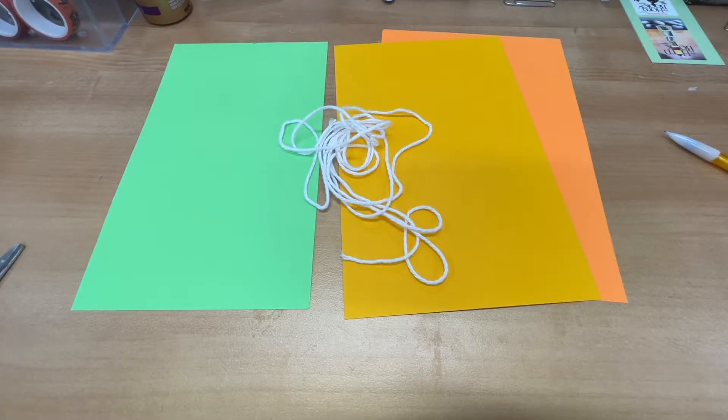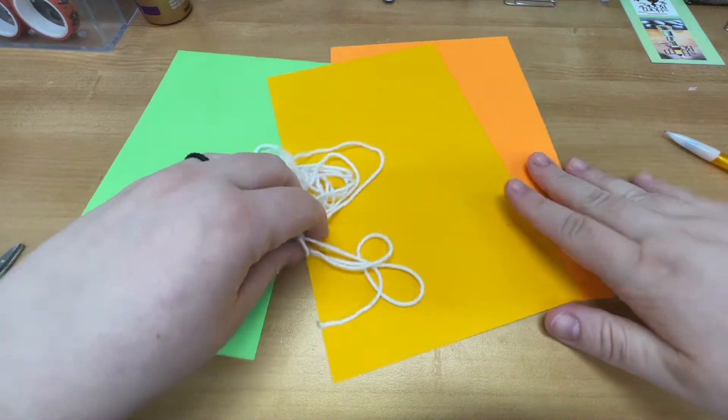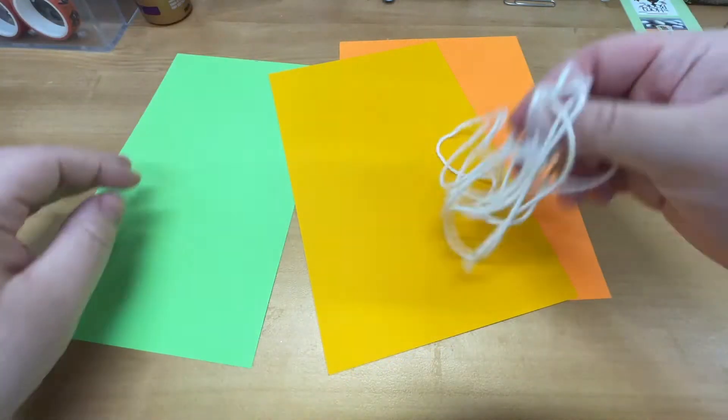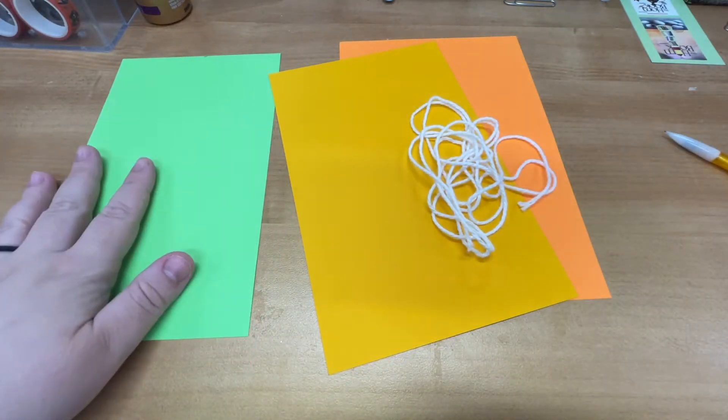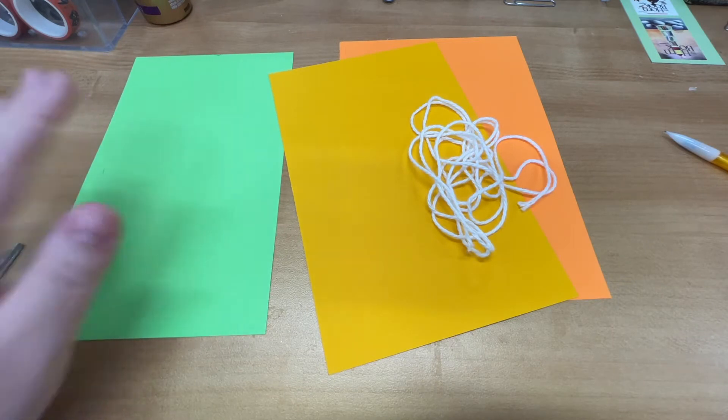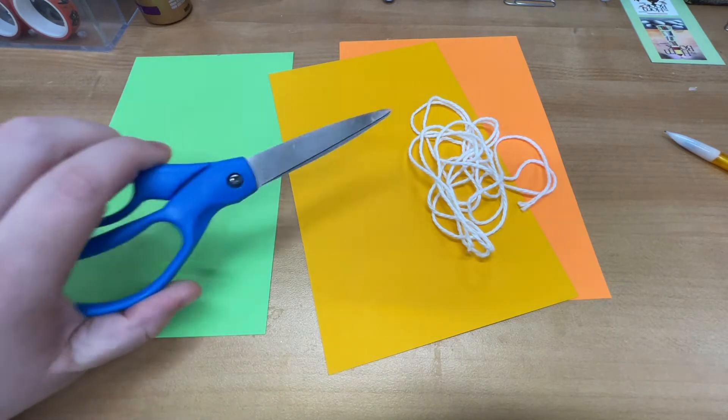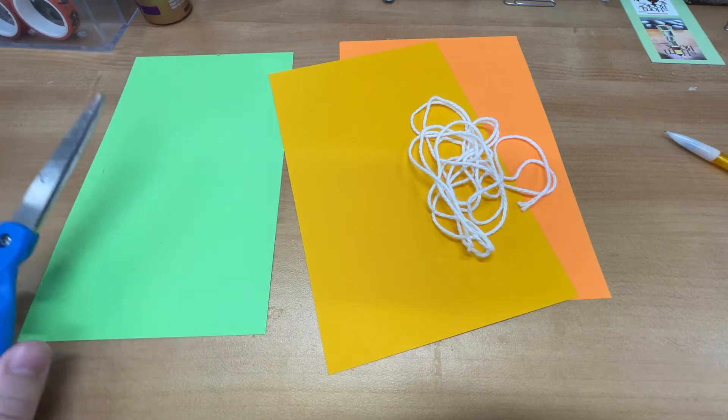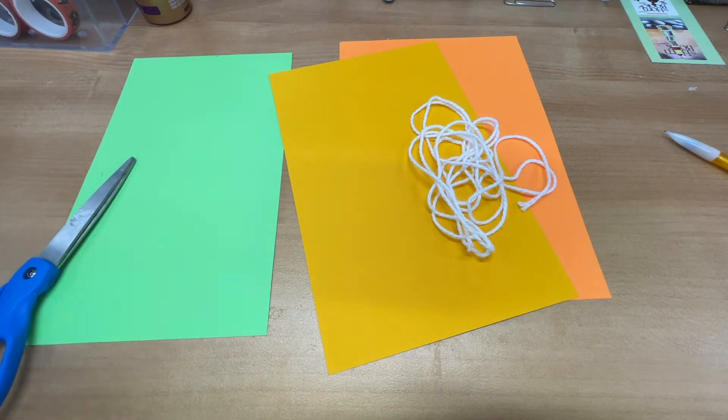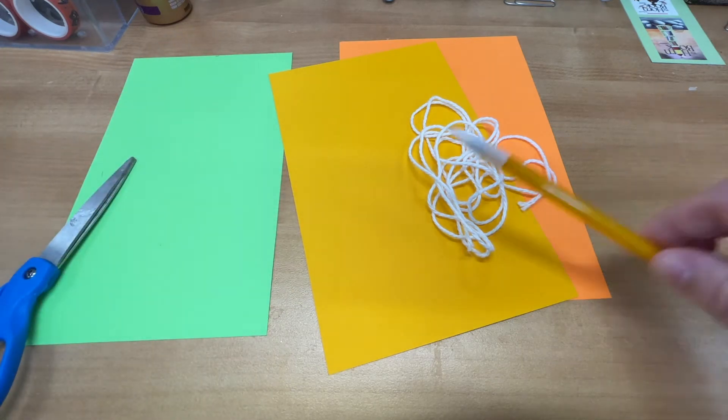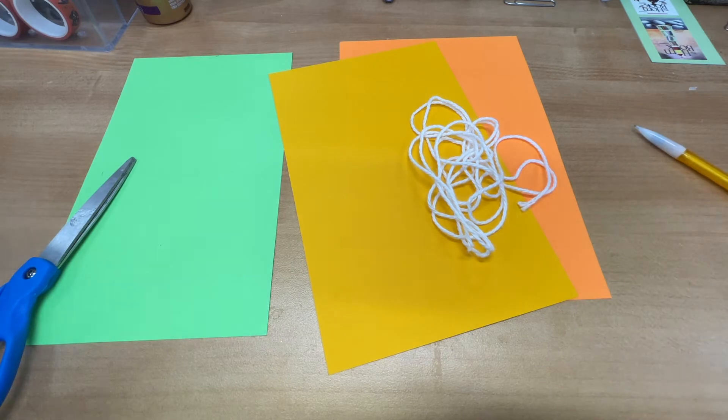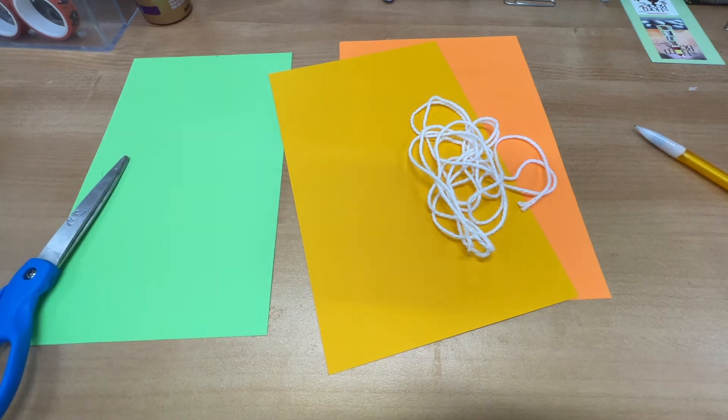Let's start with the materials. You should have two pieces of orange paper, some white string, some green paper, scissors - I find that super helpful - and a black crayon or marker, whatever you prefer.